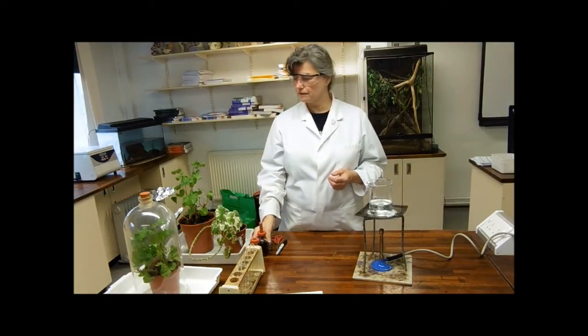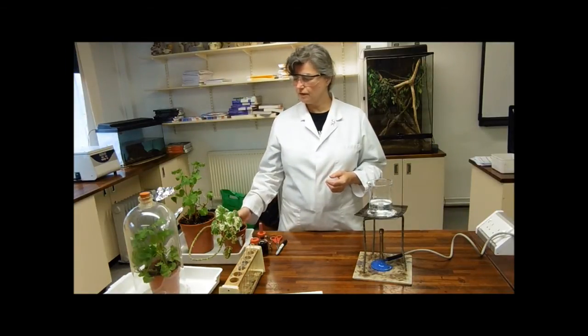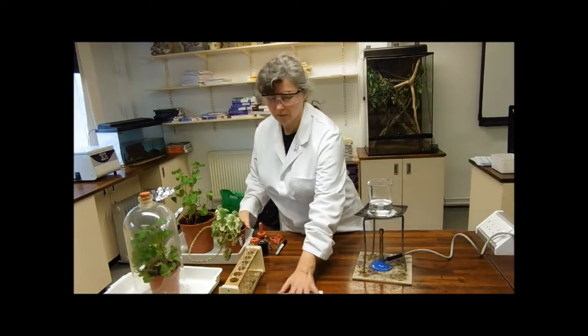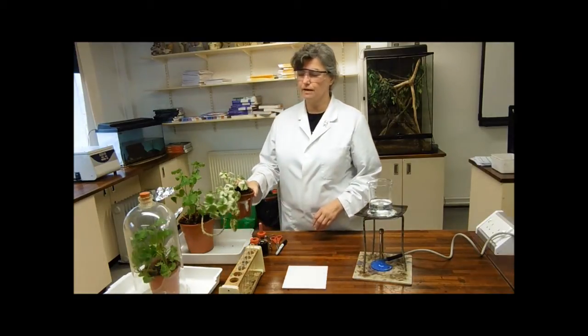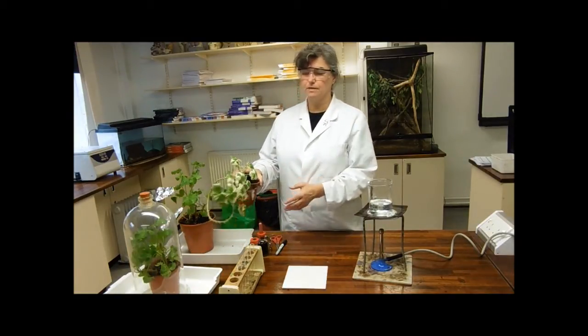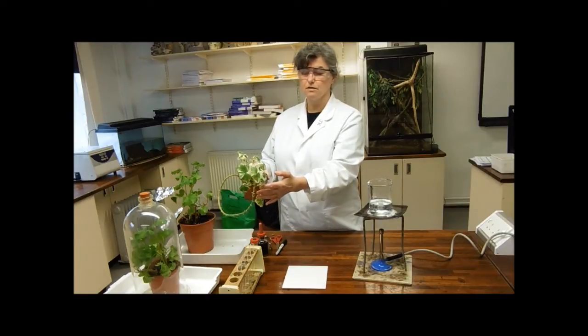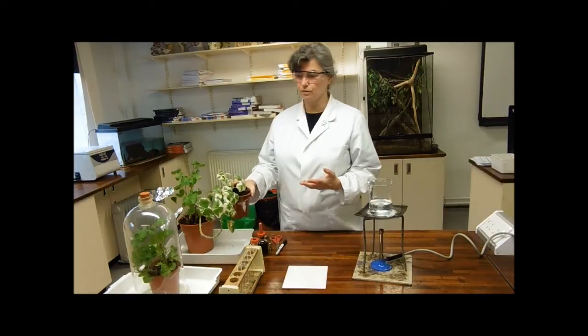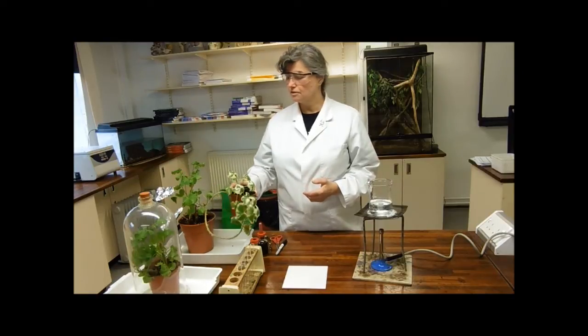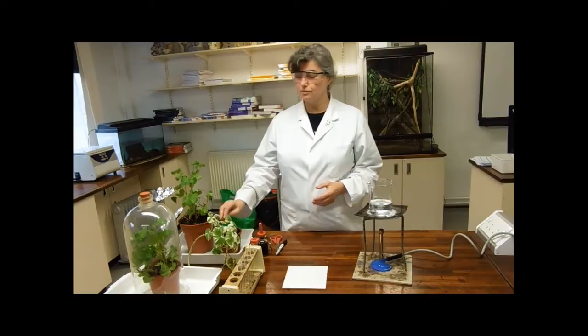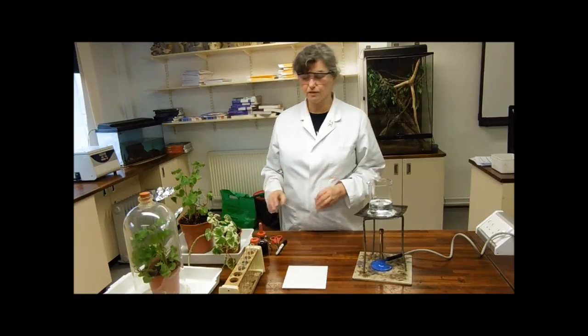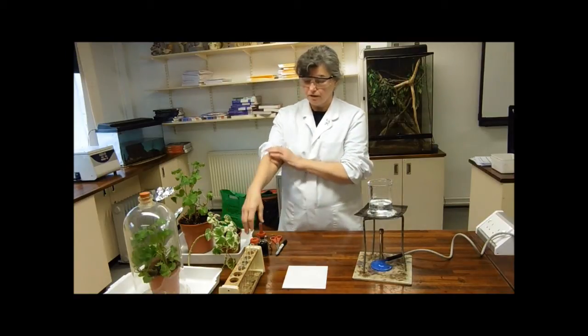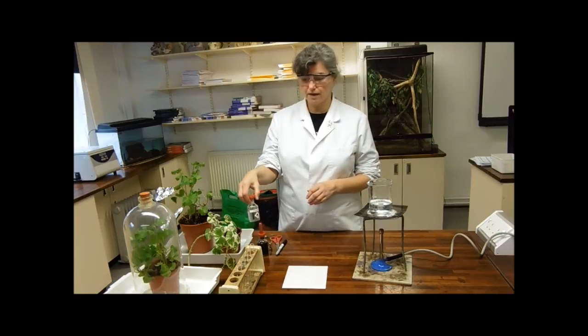However, we have a little bit of a problem, because if I just put the leaf onto my white tile and drop some iodine on it, I'm not going to be able to see very much, because the green of the chlorophyll will mask any color change. So first of all, we are going to need to remove the chlorophyll from the leaf, and for that, we're going to use ethanol.